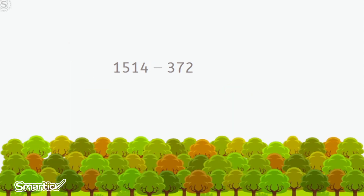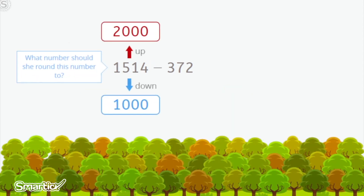Can you help Zoe? What number should she round to? Her number is 1,514. If we round down to 1,000, that seems too little. So I think I am going to decide on rounding up to 2,000.